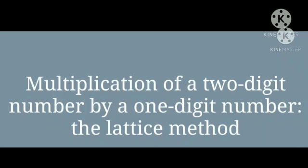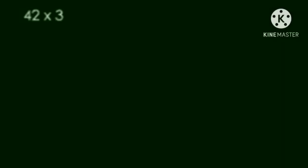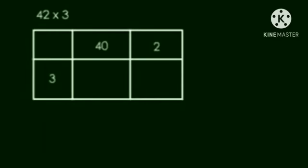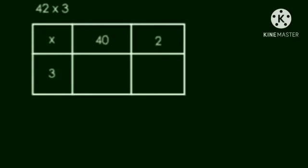Multiplication of a 2-digit number by a 1-digit number: the lattice method. 42 into 3. Now what we are going to do is split 42 as 40 plus 2. Write this number in the boxes. See here, 42 and 3. Here is the multiplication sign.